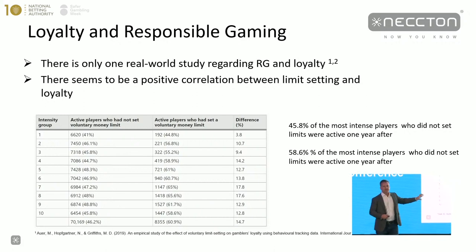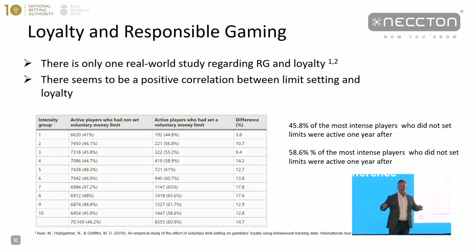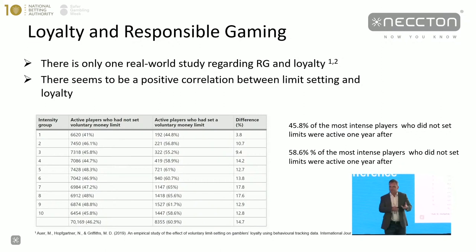This shows a clear correlation between responsibility, sustainability, and loyalty. Of course, there are questions: can you make somebody choose a limit? Some researchers and operators strongly believe mandatory spend limits are important because you can't make somebody self-exclude — those are basically distinct groups of people. Or can you nudge somebody into choosing limits, which would of course have larger impacts?